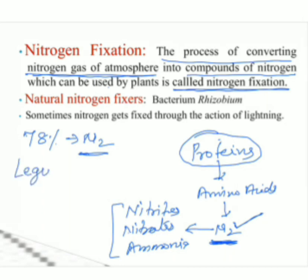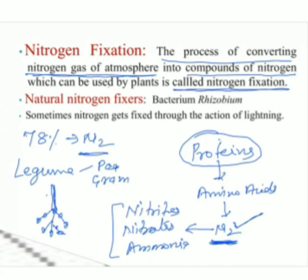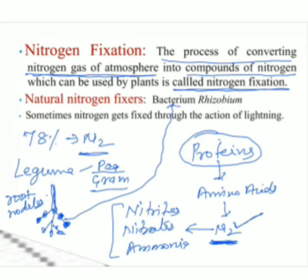Some plants are called legume plants — for example, pea, gram, and other pulses. In their roots, there are small balloon-like structures called root nodules. In these root nodules, a particular bacteria is present.